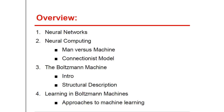We will discuss the difference between the human brain, also known as the man, and artificial networks, also known as the machine. Then I will cover what the connectionist model is, since the Boltzmann machine is related to this type of model in neural computing. In the third section I will introduce the Boltzmann machine and talk about its structure. Finally, I will go over types of learning in Boltzmann machines and mention the five approaches characteristic to them.